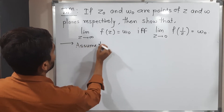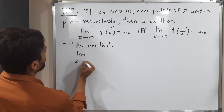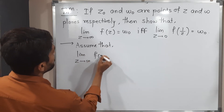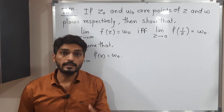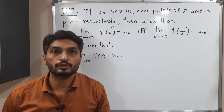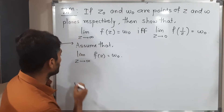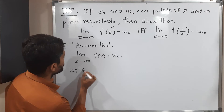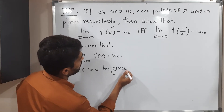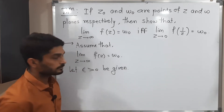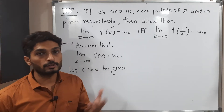Assume that the limit as z tends to infinity of f(z) equals w₀. Using the epsilon-delta definition, I am going to prove the other part. Let epsilon greater than 0 be given. By definition of limit, we proceed.